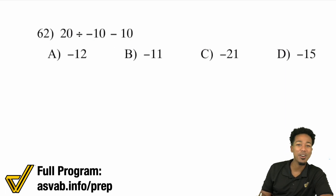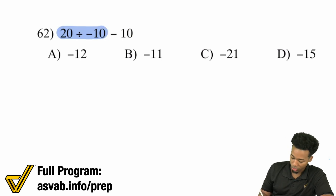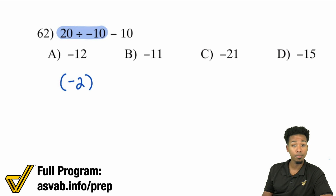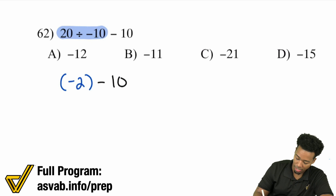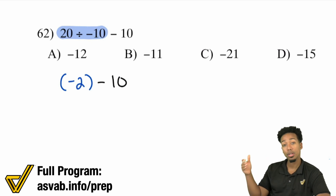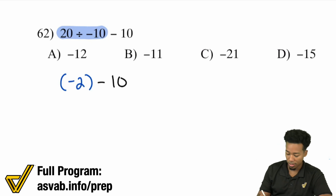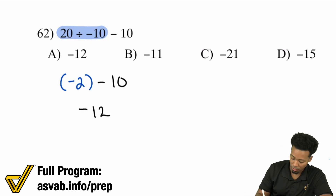We need to make sure we follow the order of operations — it's 20 divided by negative 10 up first, and then we do the minus 10. So 20 divided by negative 10 is negative 2, because 20 divided by 10 is 2 and a positive divided by a negative is negative. Then negative 2 minus 10: if you're already negative 2 and you take away 10 more, you're more negative — a negative minus a number is getting more negative. So that's negative 12.